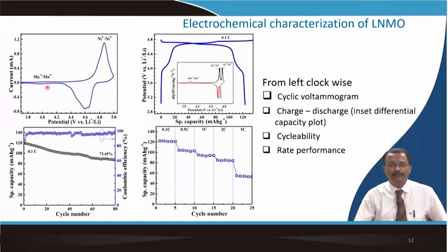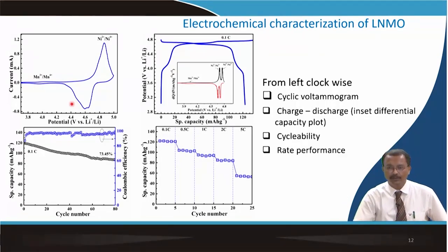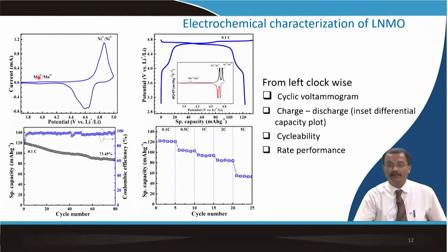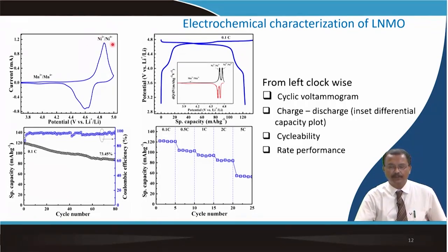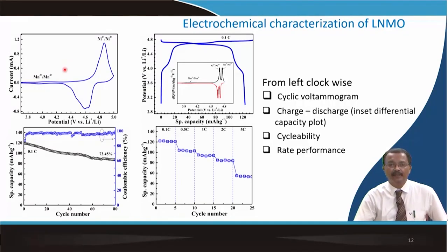In the half cell configuration, the anode is lithium foil itself. Spacers and a spring are required, along with a gasket and top can — everything crimped together to form the coin cell with 20 mm diameter and 3.2 mm thickness. Cyclic voltammetry is then performed where oxidation and reduction peaks are clearly visible. Manganese in the 3+ valence state is present in the disordered structure, and nickel undergoes oxidation from 2+ to 4+, with the process being reversible.